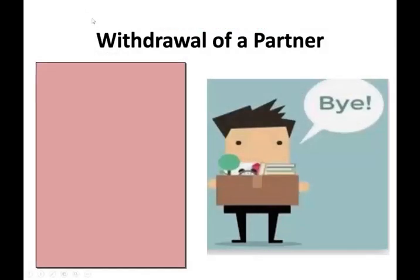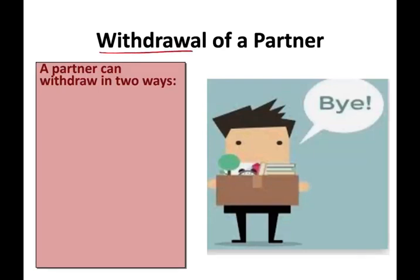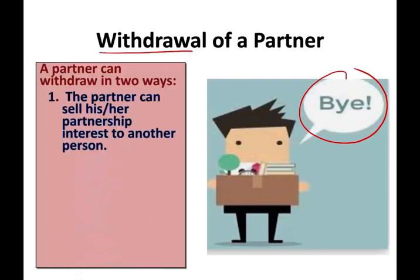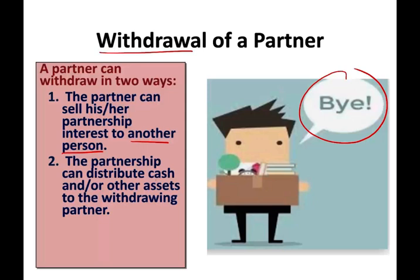In this session, we're going to be looking at a withdrawal of a partner, in contrast to the prior session where we looked at an admission. A partner can withdraw — basically say goodbye to the partnership — in one of two ways. The partner can sell his or her partnership interest to another person, which could be another partner. Or the partnership can distribute cash and other assets to the withdrawing partner — the partner says, give me my share of the business and I'm leaving.